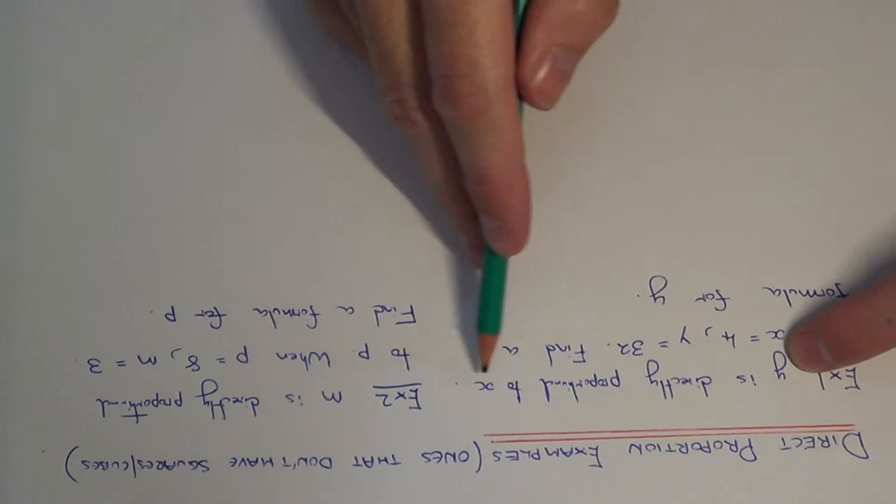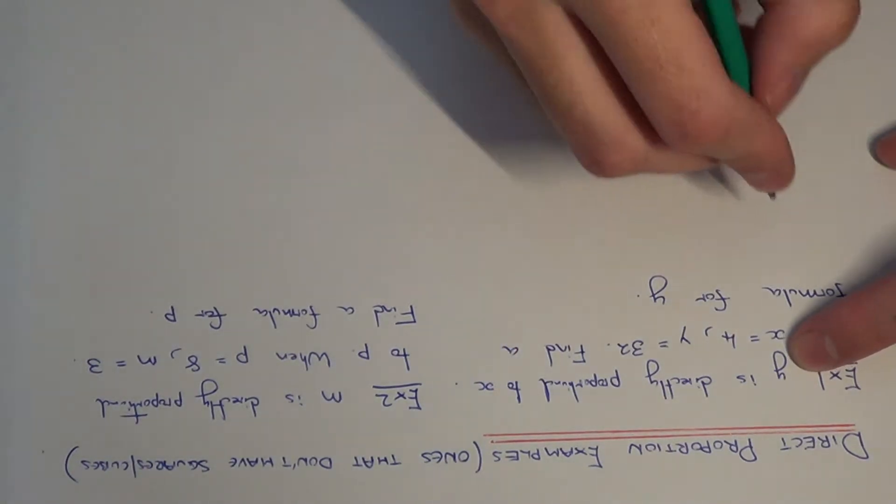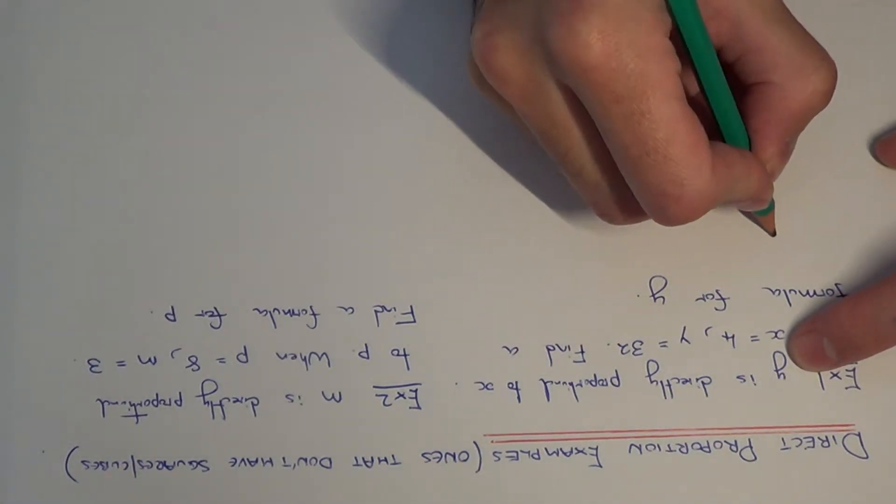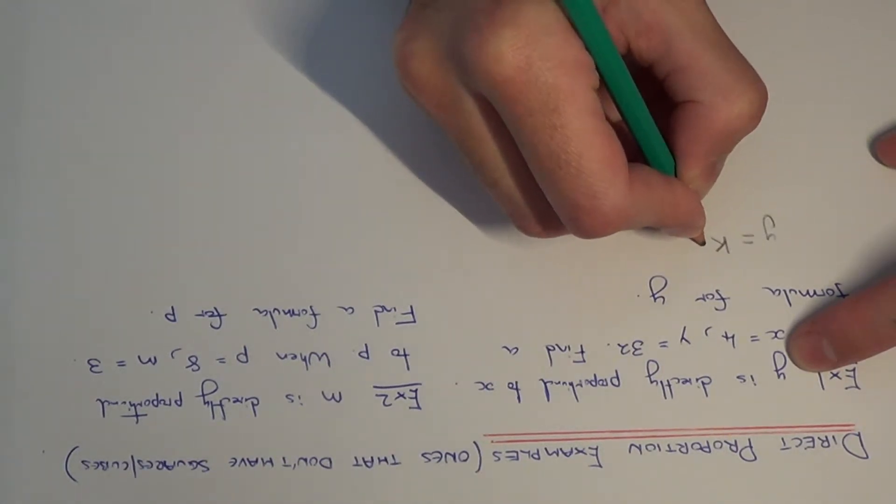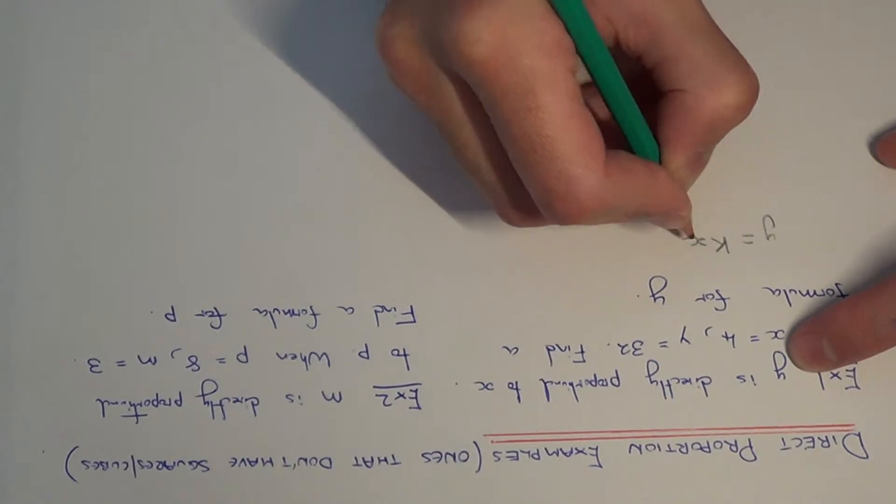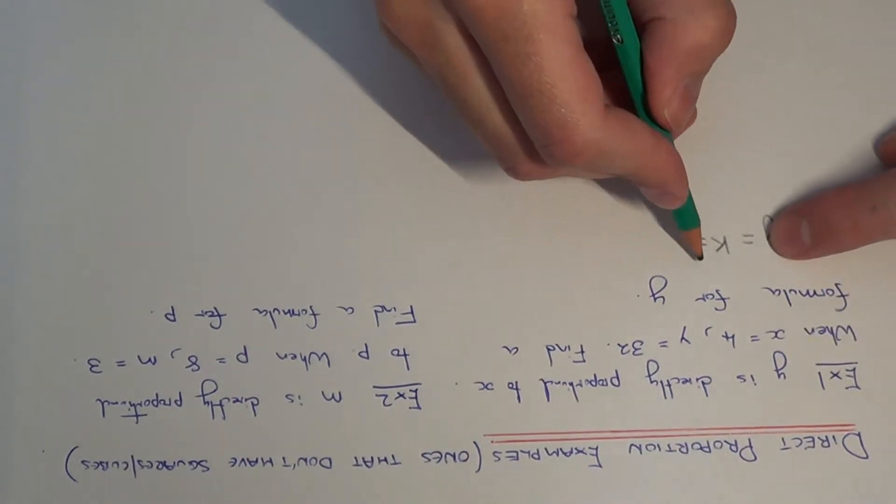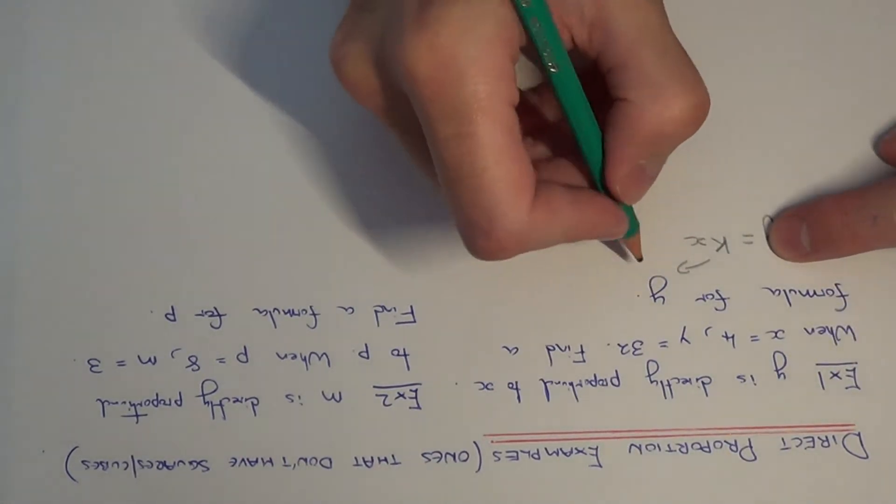So, since y is directly proportional to x, then this means our formula will take the form y equals k multiplied by x. And this k here is called the constant of proportionality.